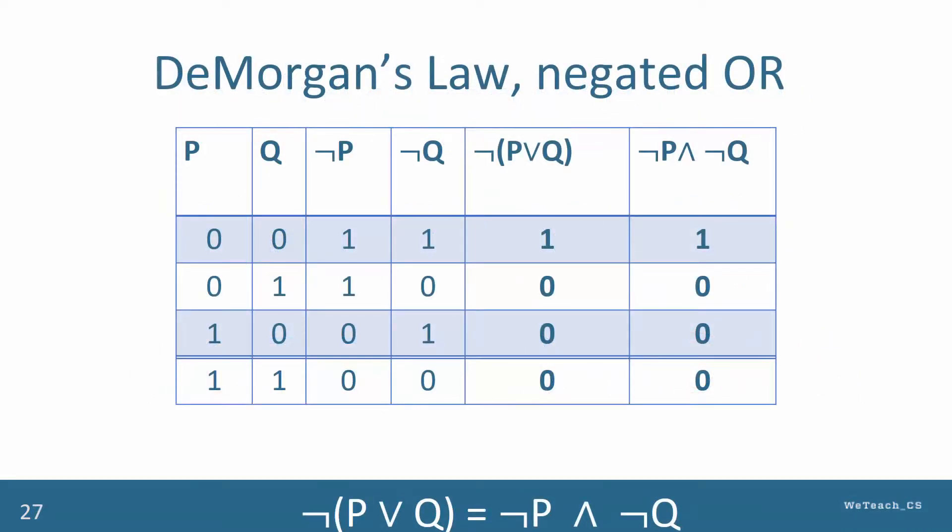This slide shows proof of the negated OR version of De Morgan's Law using a truth table. Study these last two columns carefully to see that they are equivalent for each of the four true or false combinations.